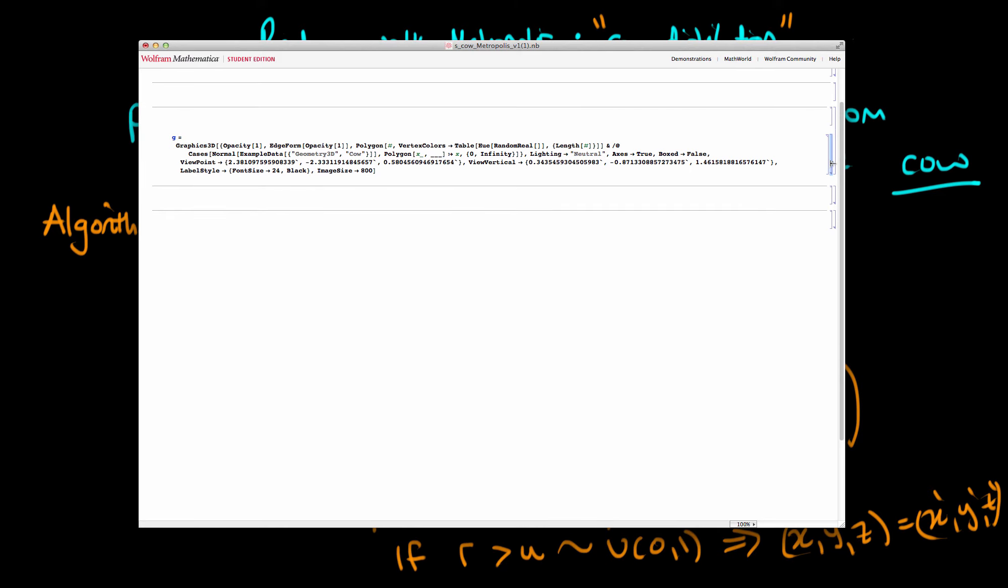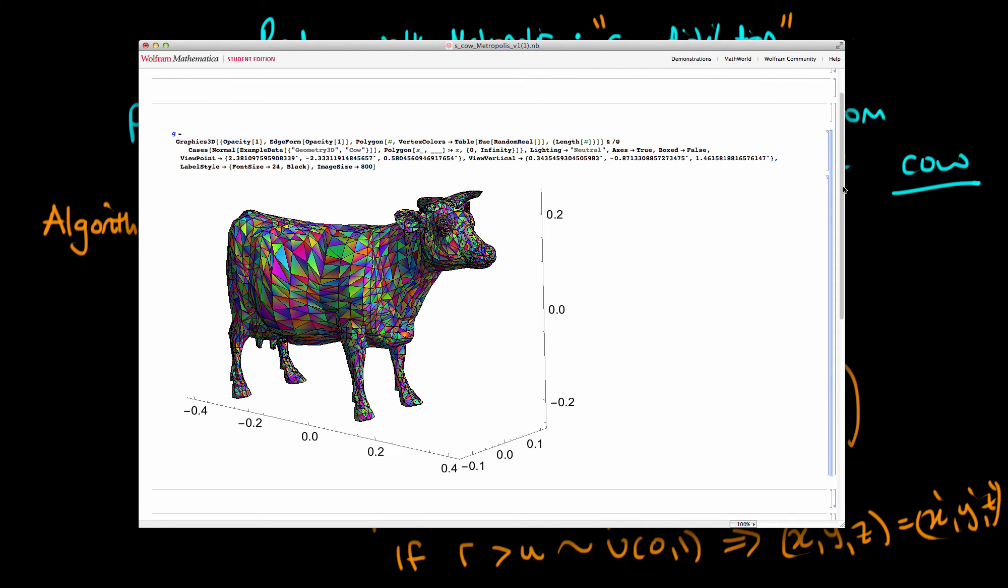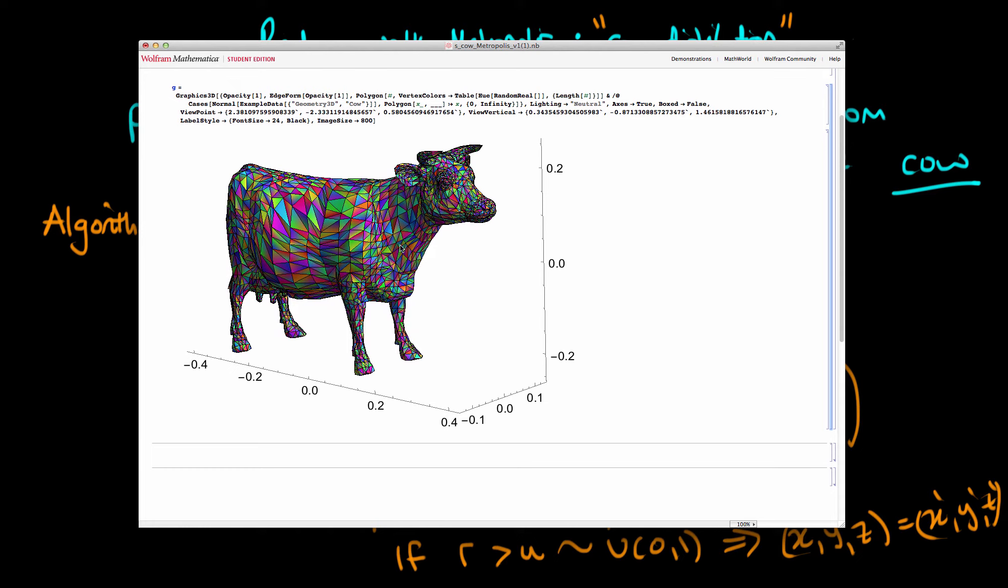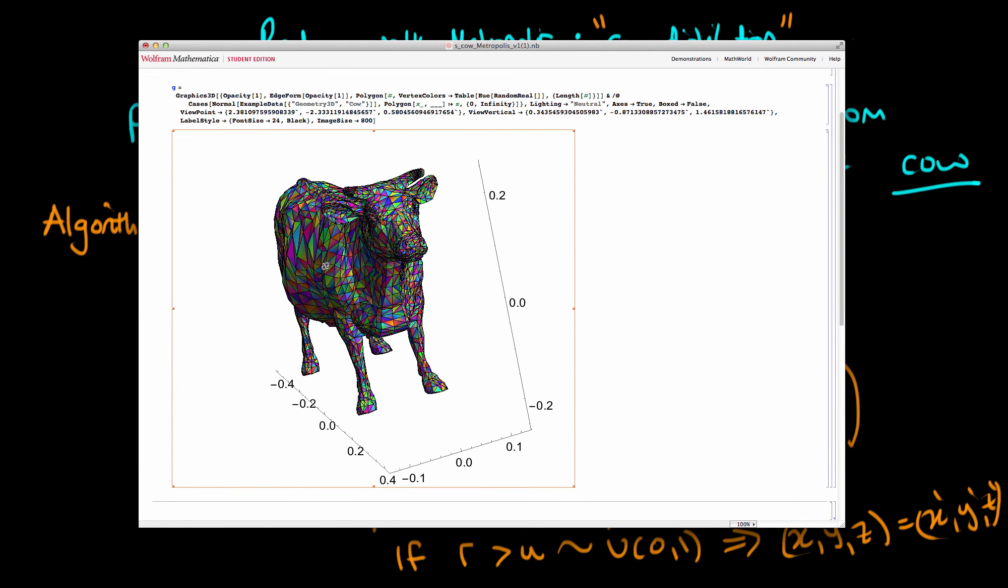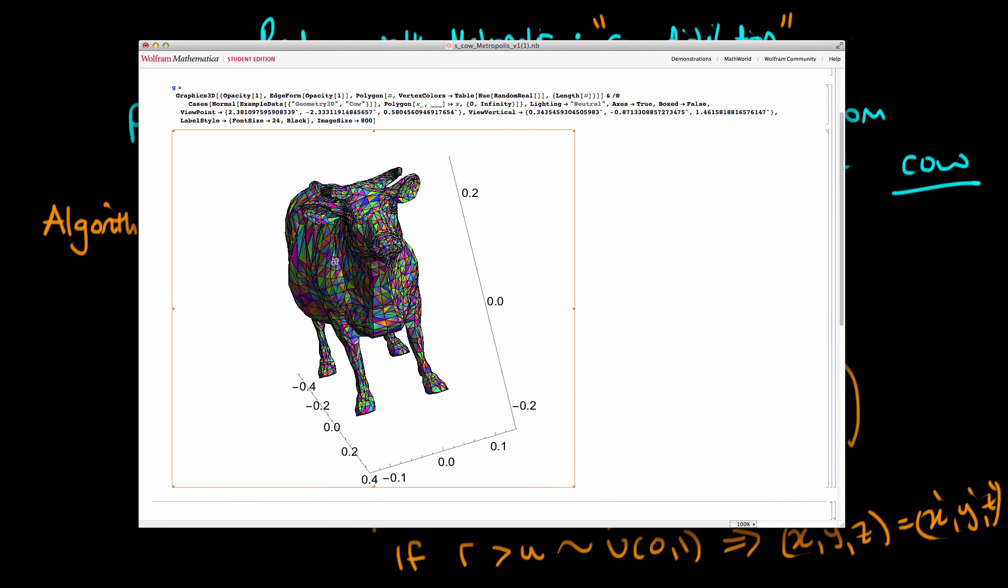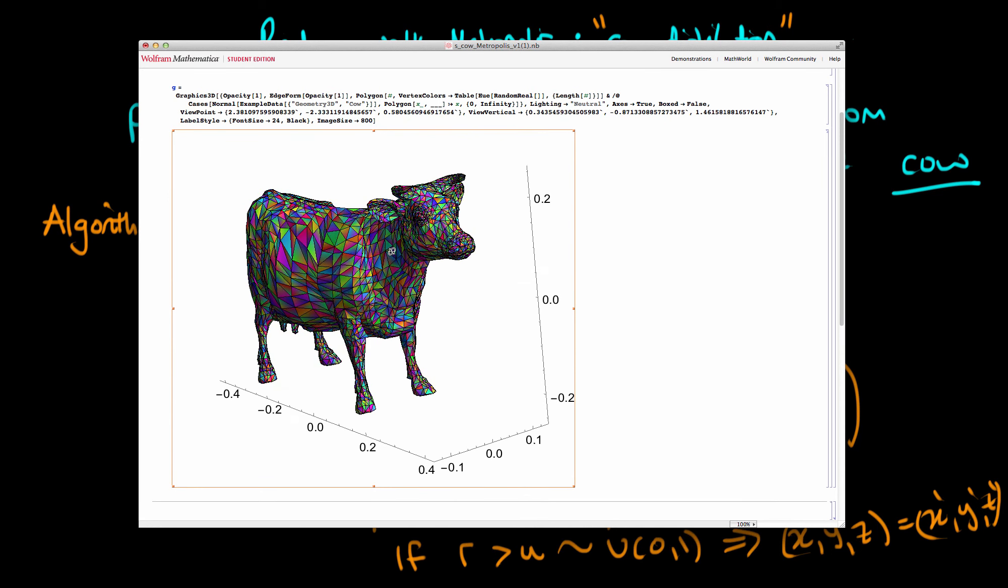So you may be wondering what I actually meant by a cow here, and I've been referring to the cow distribution. I'm just going to show you in Mathematica. This is the boundary around which we are constructing our distribution. So it looks something like this, and I can rotate it around. As you see, it actually is a cow.